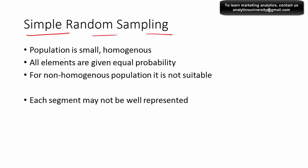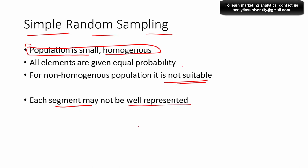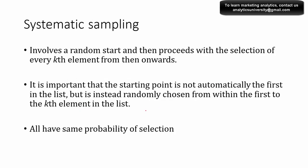Simple random sampling is used mostly when the population is small and homogeneous, because it is computationally expensive. All elements are given equal probability. For non-homogeneous populations it's not suitable — if you have different segments it's better to go for other types of sampling, such as stratified sampling. The problem with simple random sampling is that each segment is not well represented, and some segments may be missing from the sample, which could bias your analysis and results.